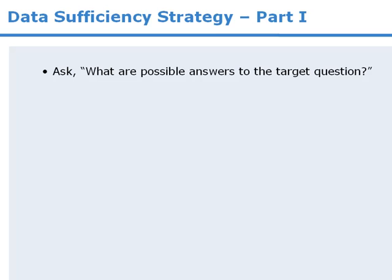All target questions are impossible to solve without any additional information. In other words, for any target question there will be more than one possible answer. Your task is to determine whether each statement provides enough information to reduce the list of possible answers down to just one answer. So it's a good idea to know the range of possible answers to the target question before examining the statements.